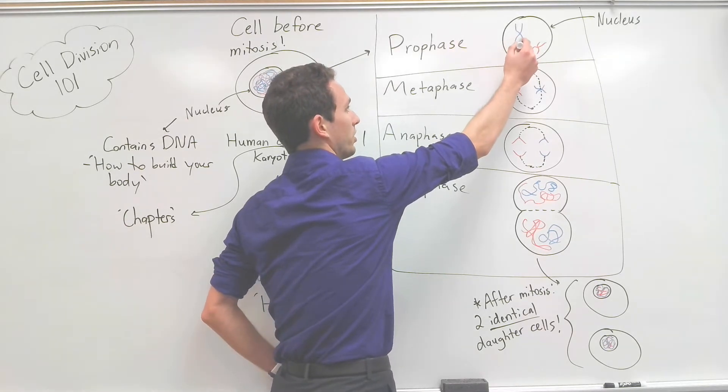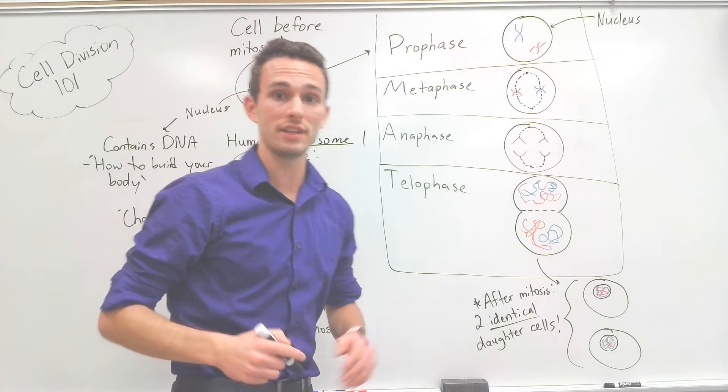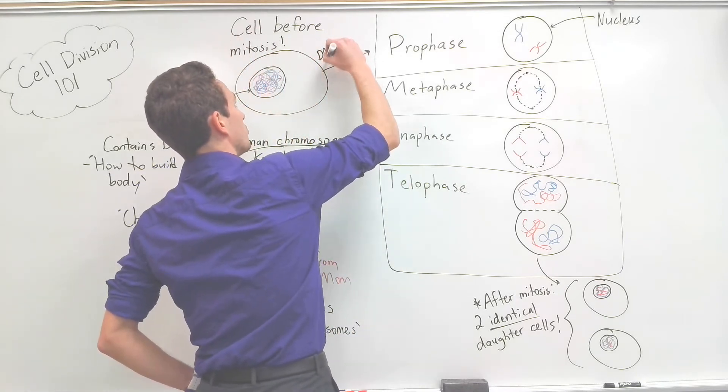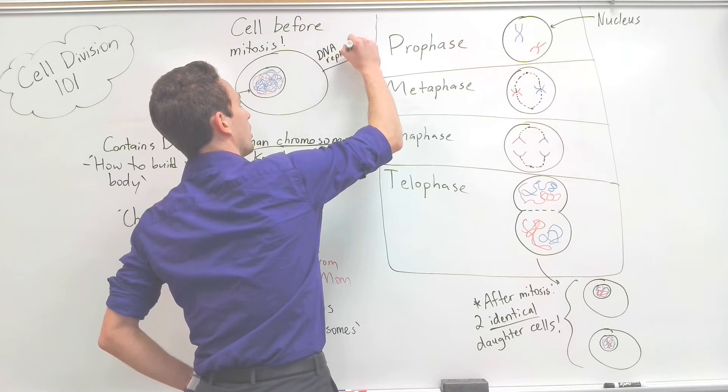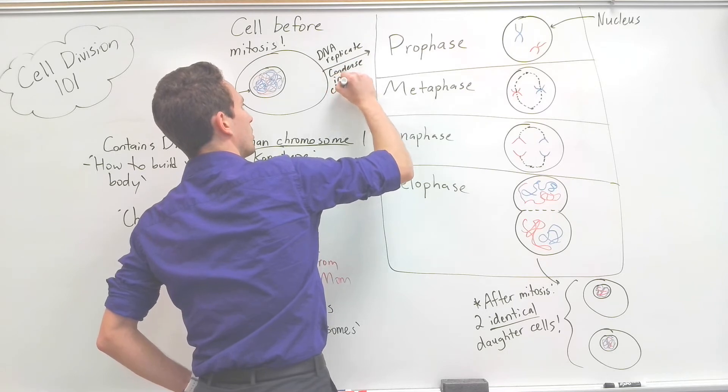So now you've got two chromosome ones from dad, two chromosome ones from mom. You have all the DNA you need. So let's write that. First thing that needs to happen is DNA needs to replicate and it also needs to condense into those chromosomes. And then you will see that it will look like this.